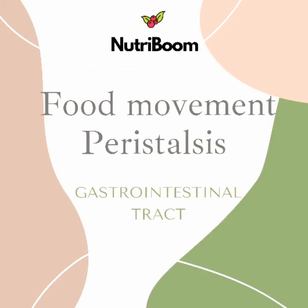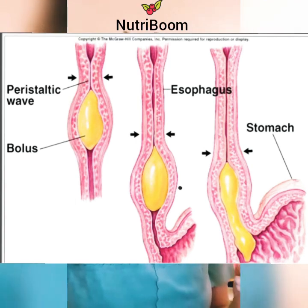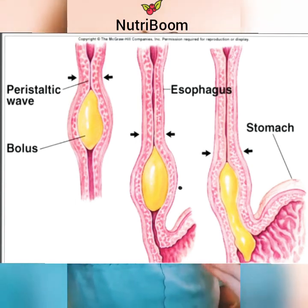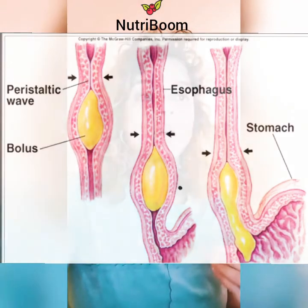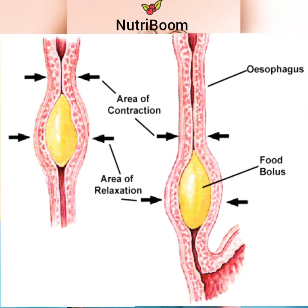Your food moves through your GI tract by a process called peristalsis. The large hollow organs of your GI tract contain a layer of muscle that enables their walls to move. This movement pushes the food and liquid through the GI tract and mixes the contents within each organ. The muscle behind the food contracts and squeezes the food forward, while the muscle in front of the food relaxes to allow the food to move.